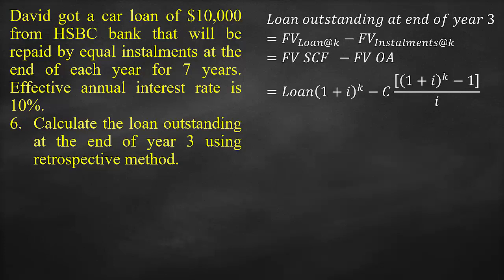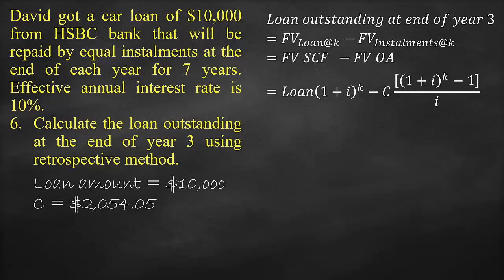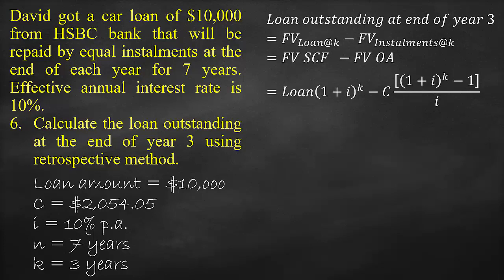We have a loan amount of $10,000, a periodic installment of $2,054.05, an effective annual interest rate of 10%, a total number of periods of 7 years, and the number of paid installments is 3 years.